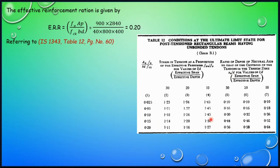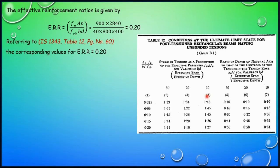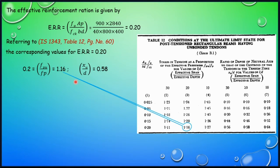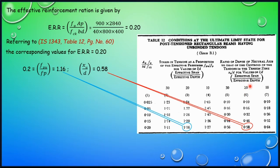With respect to the effective reinforcement ratio, we also consider the span-to-depth (L/D) ratio. For an effective reinforcement ratio of 0.20 and an effective span-to-depth ratio of 20, the corresponding FPU/FP value from IS1343 Table 12 is 1.16. Similarly, the XU/D value from column 6, where the effective span-to-depth ratio is 20 and effective reinforcement ratio is 0.2, is 0.58.